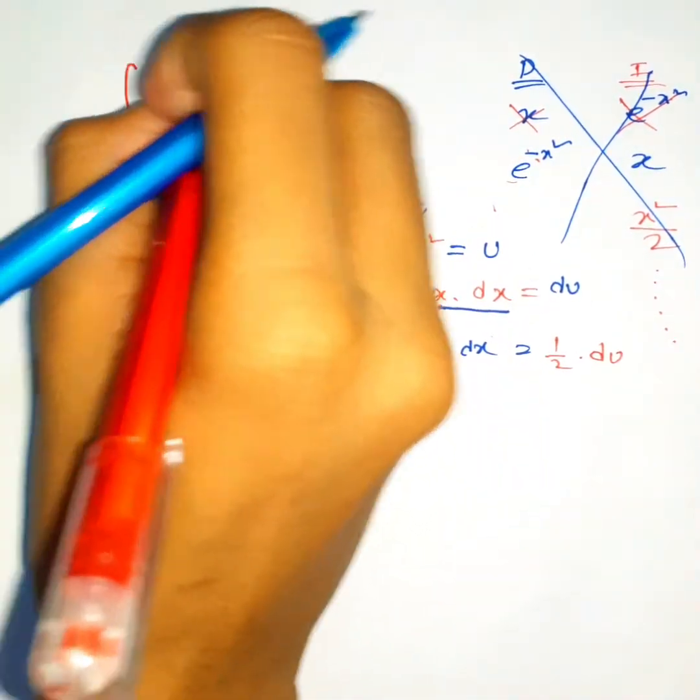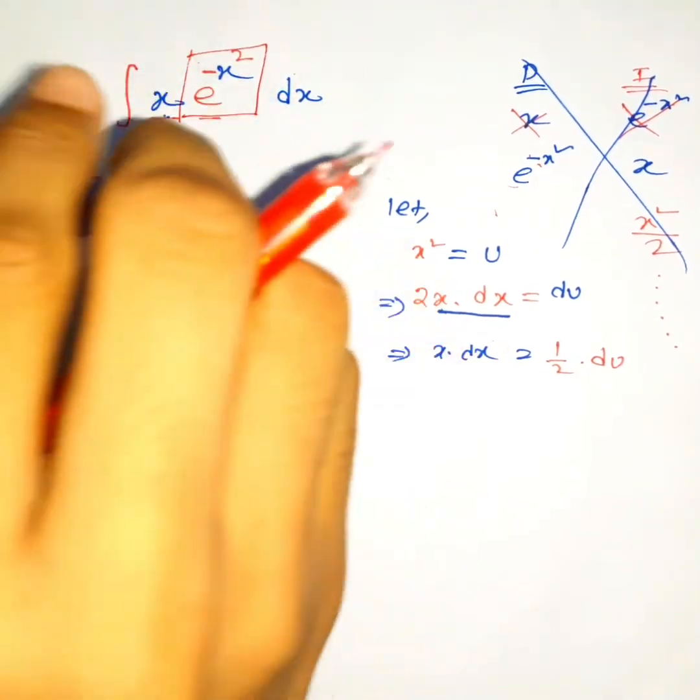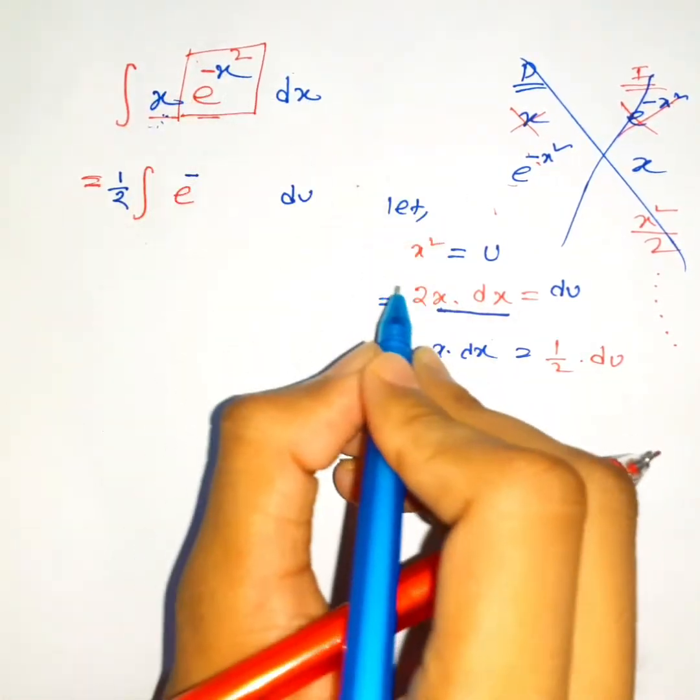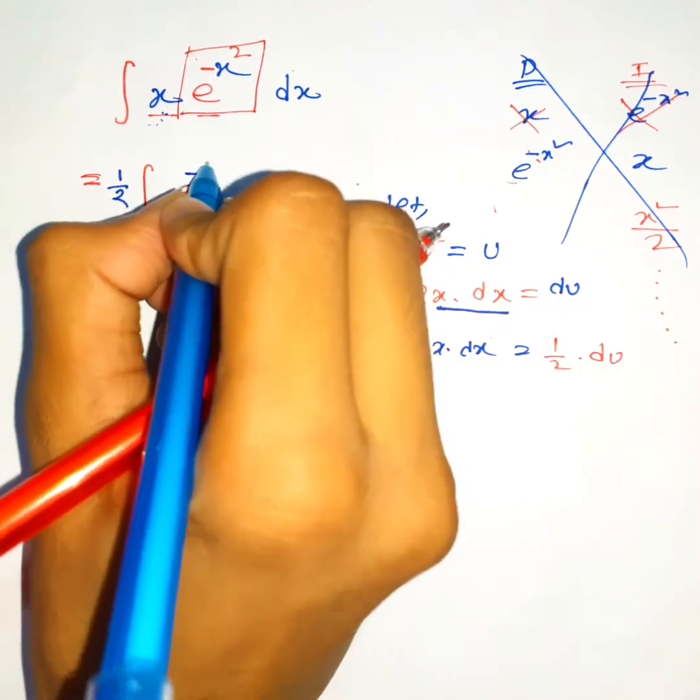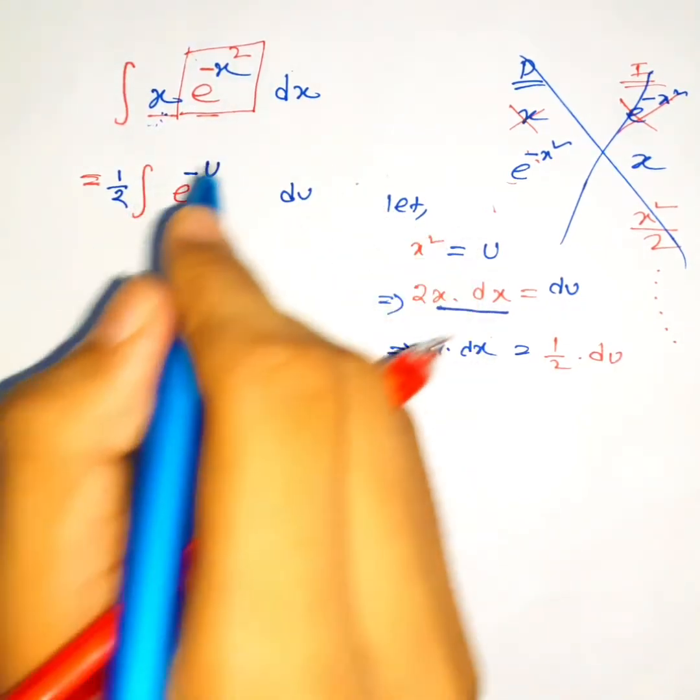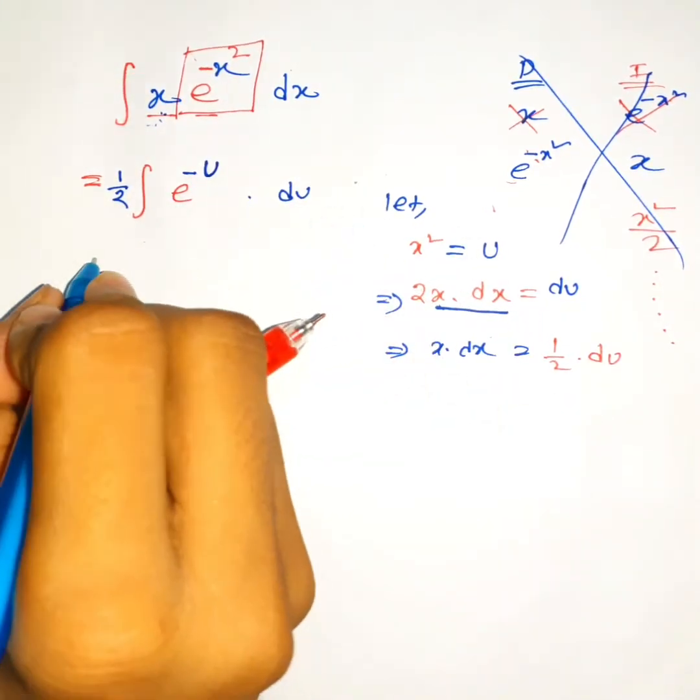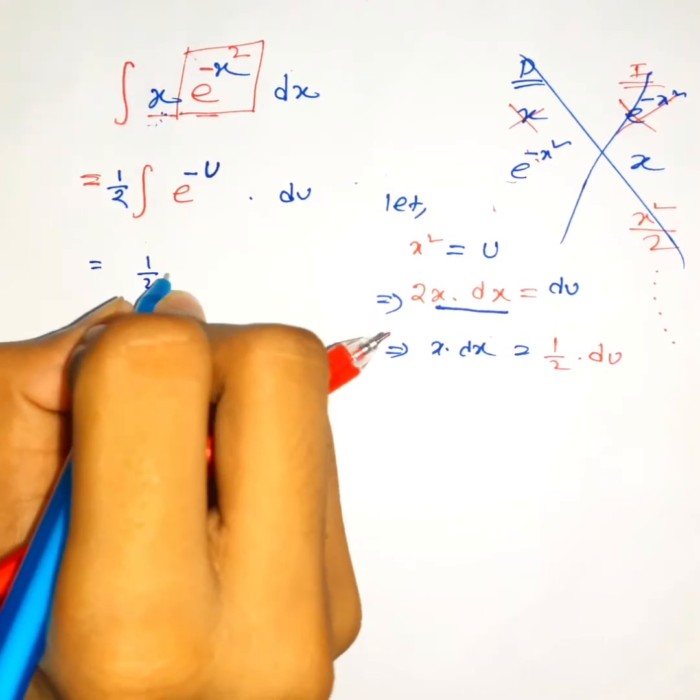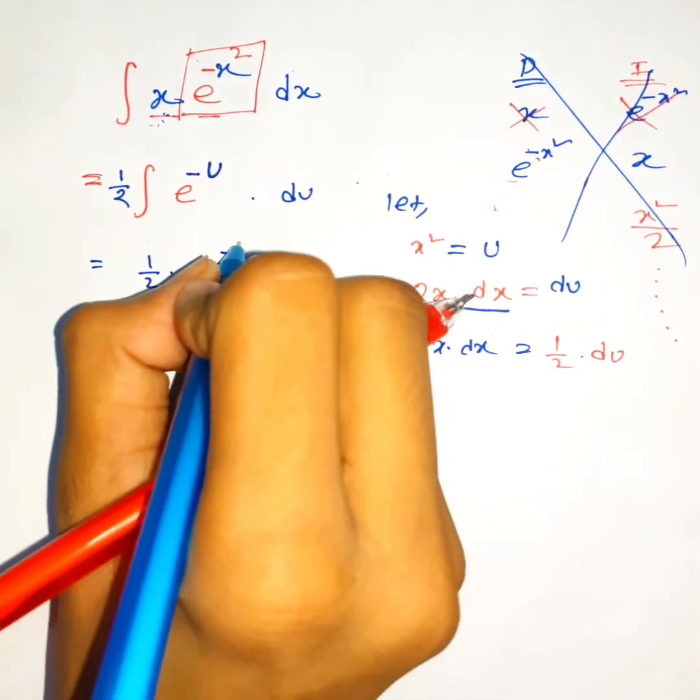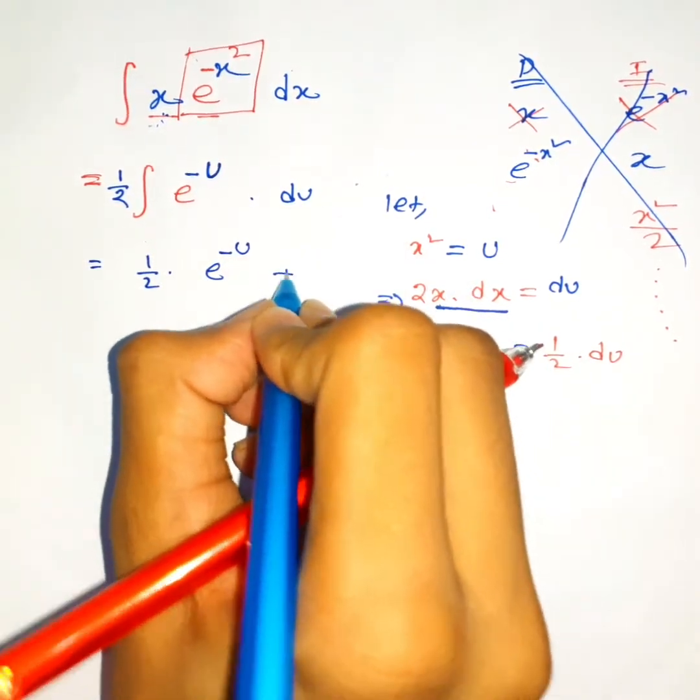This part is left, so this is equal to e to the negative x squared. And x squared is the same as u. We are almost done, this is so easy now. This is equal to half e to the negative u plus c.